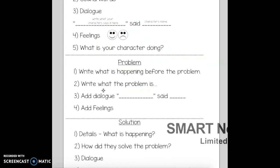Another thing you must have in your realistic fiction is a problem. Write what is happening before the problem — like what's your character doing — and then write the problem: what happened to the character? You can add dialogue to that to make your story even better, and feelings — how did the character feel when they had that problem?